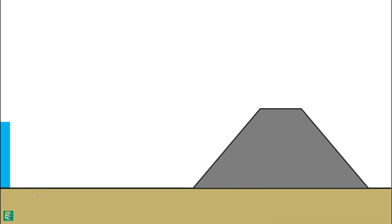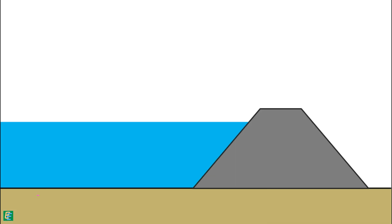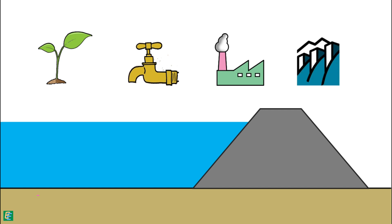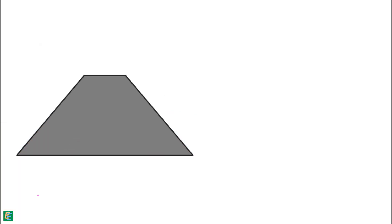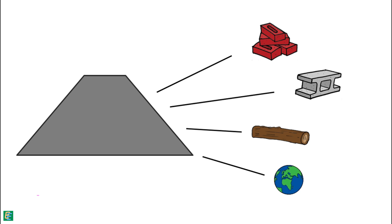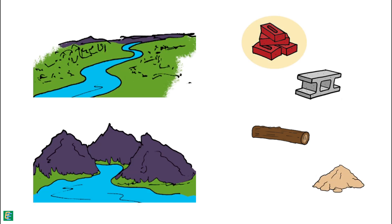A dam is a barrier that restricts the flow of water and can be used to collect water. This water may be utilized for many purposes such as irrigation, human consumption, industrial use, and hydropower generation. Dams can be created using different materials such as bricks, concrete, timber, and earth — that means soil.